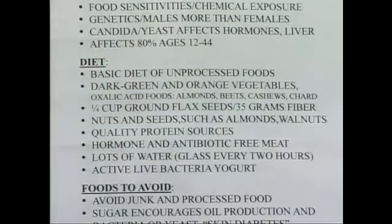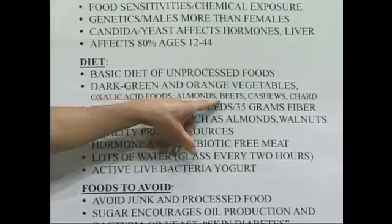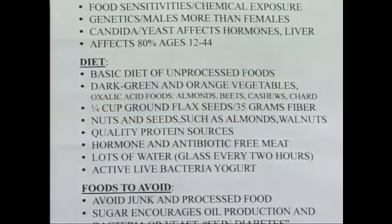Dark green and orange vegetables — the carotenoids and then the green vegetables. There are certain foods that contain an acid called osic acid, which includes almonds, beets, cashews, and Swiss chard. Those acids really can help reduce breakouts. Eating those types of foods — most of us like almonds and beets and that type of stuff — really helps with acne.